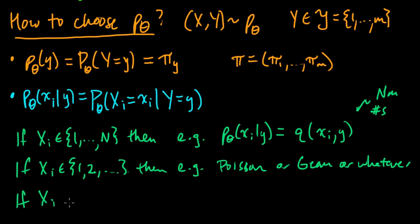And similarly, if it's, say, real valued, then you might choose Gaussian. That's a pretty common choice. Gaussians are always popular.